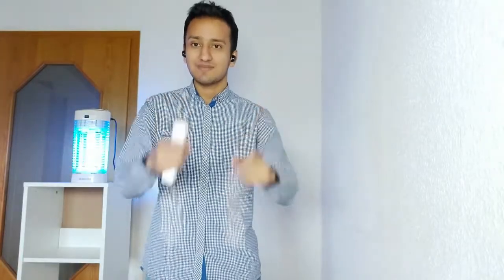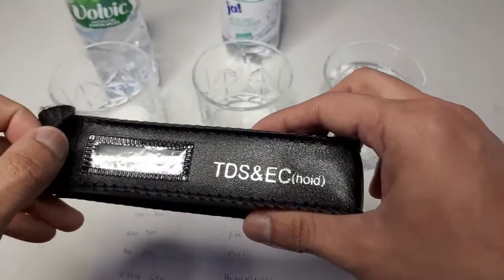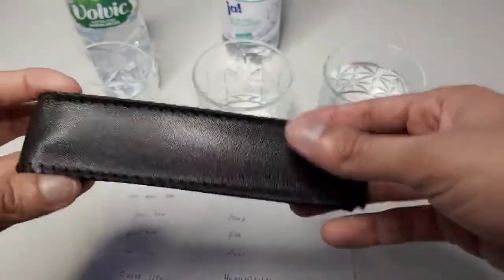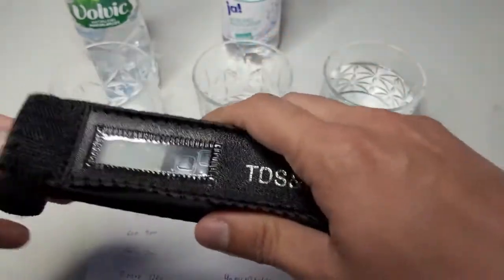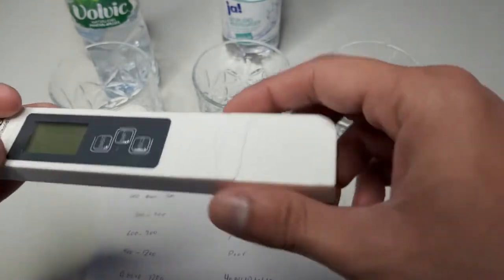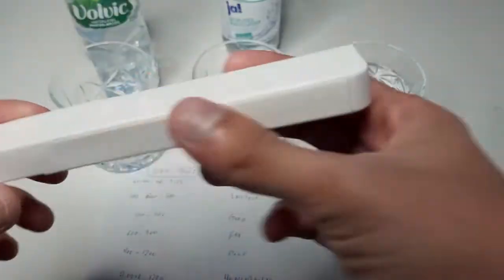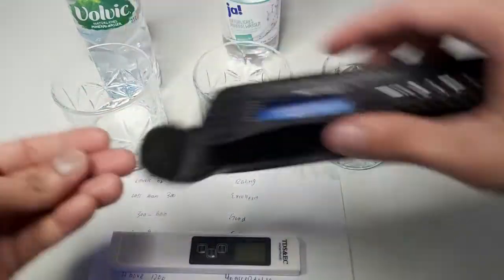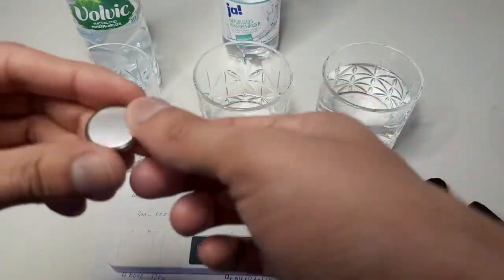Our TDS and EC meter comes with a nice protective case. After opening the case, the first thing we will see is the TDS and EC meter itself. White color and looks of good quality. Extra battery.